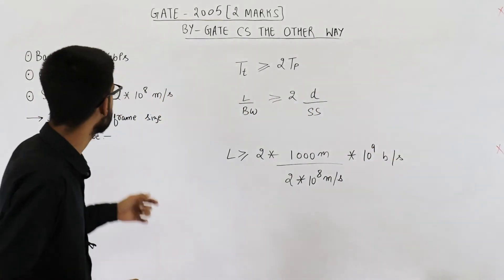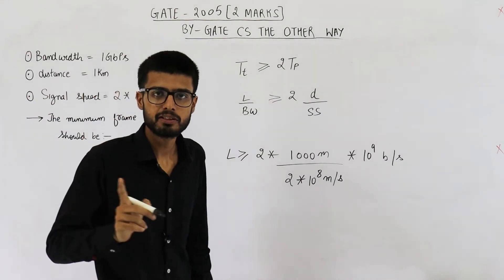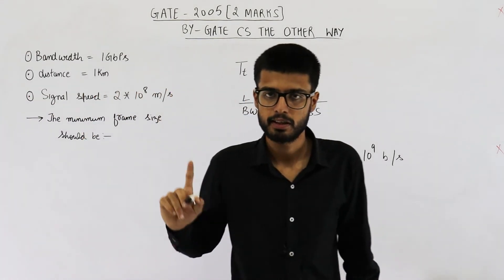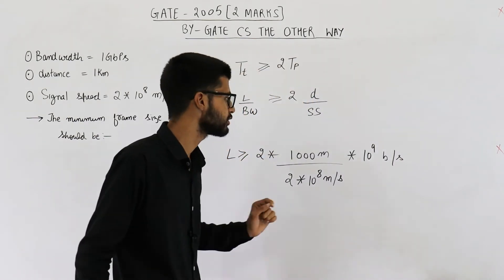Whenever we are talking about bandwidth, value of G has to be taken as 10 raised to the power 9. Please don't write 2 raised to the power 30. It's when we are talking with respect to memory. But here we are talking with respect to bandwidth.